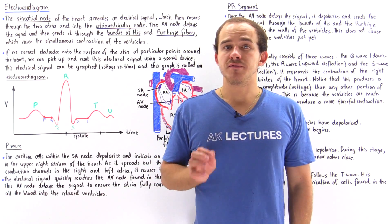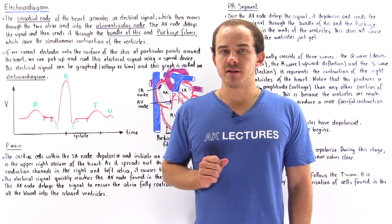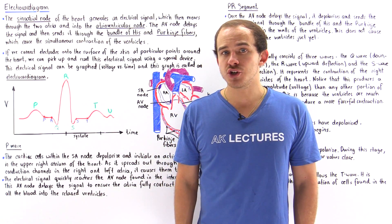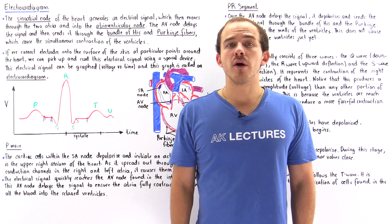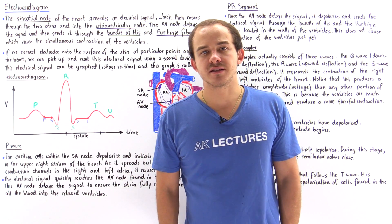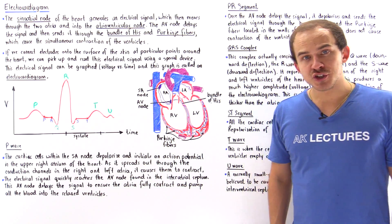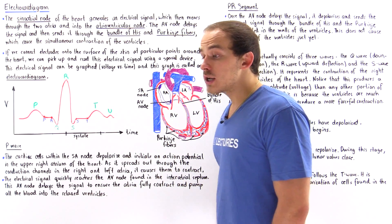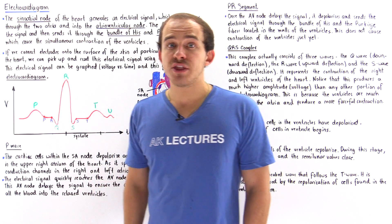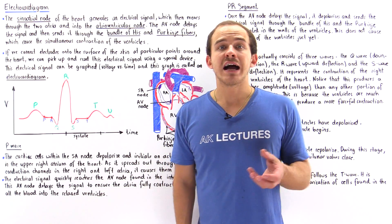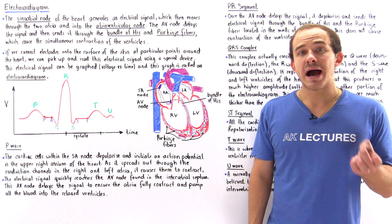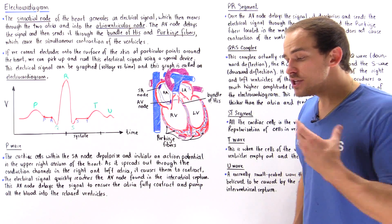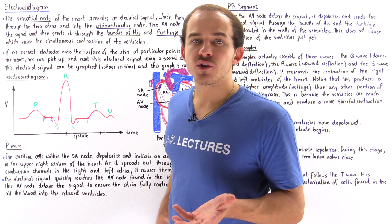The human heart is capable of generating electrical signals, and it uses those electrical signals to create the muscular contraction needed to move all that blood through the blood vessels of our body. Physicians can actually study and analyze the way that the heart produces electrical signals and determine different types of abnormalities simply by using this tool, known as an electrocardiogram.